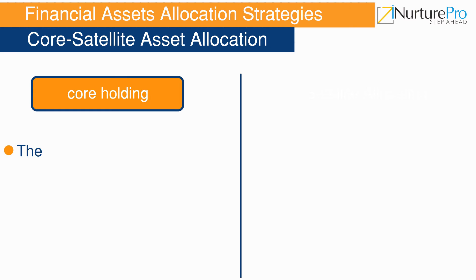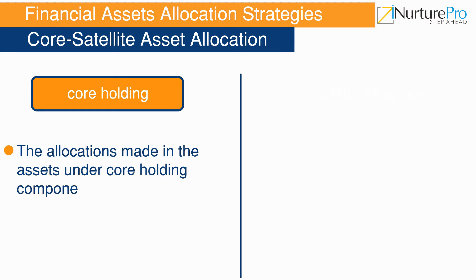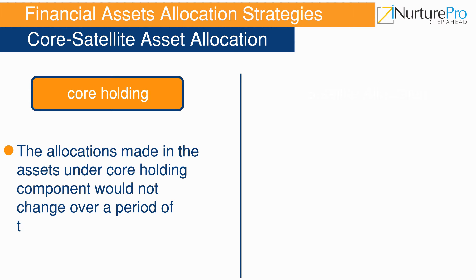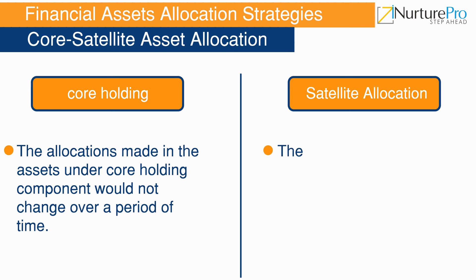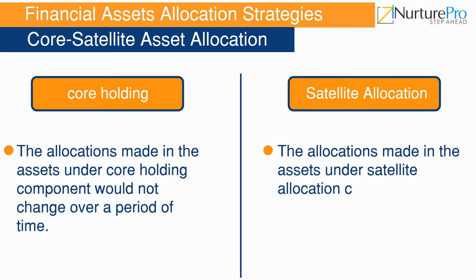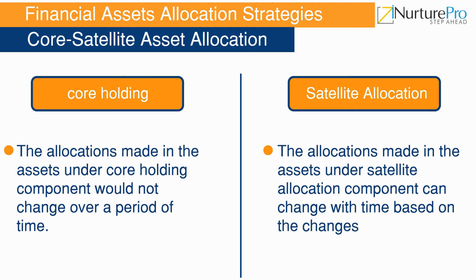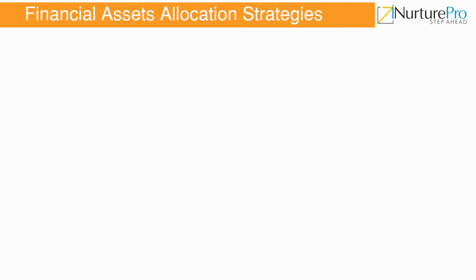Core-satellite asset allocation is a hybrid of strategic and tactical allocation strategies. It includes two components: core holding and satellite allocation. The allocations in the core holding component do not change over time, but the allocations in the satellite allocation component can change based on market conditions. The satellite allocation component provides a more active approach, allowing the investor to take advantage of market trends without risking the entire portfolio.